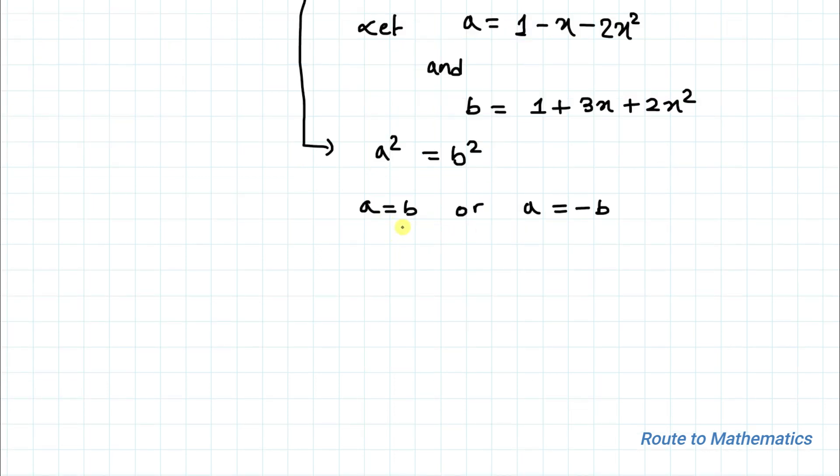Let's find the solution of x for both cases. In Case 1, we will take a equals b. Let's put the expressions of a and b. So we have 1 - x - 2x² equals 1 + 3x + 2x².